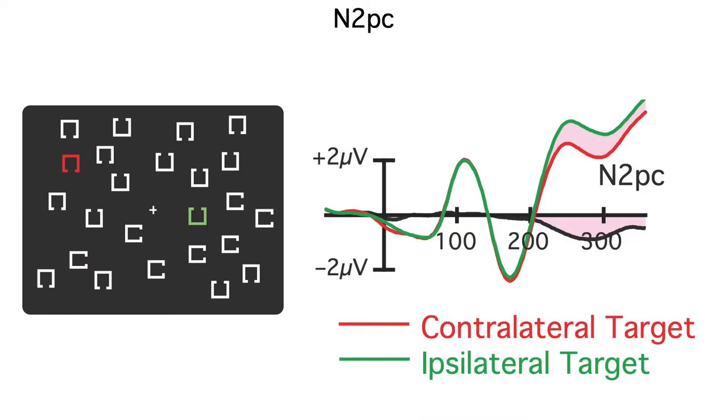In N2PC experiments, we divide up the data according to whether the target is on the left or the right side of the display, and we see a more negative voltage over the hemisphere contralateral to the target. Logically, the voltage can't be more negative over the contralateral hemisphere than over the ipsilateral hemisphere until the brain has determined whether the target is on the left or the right side of the display.